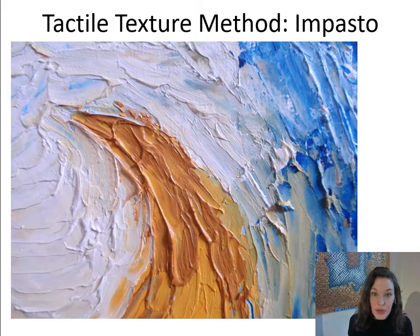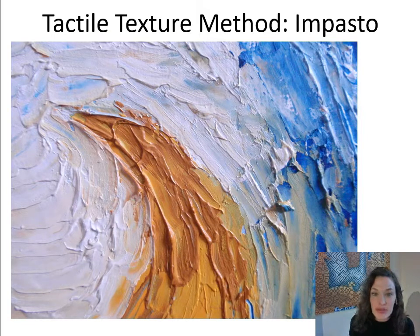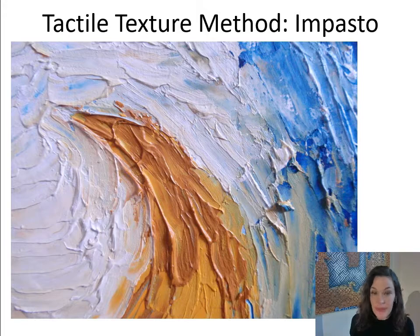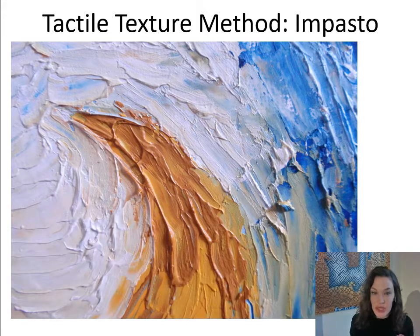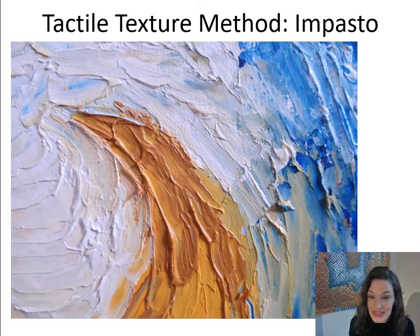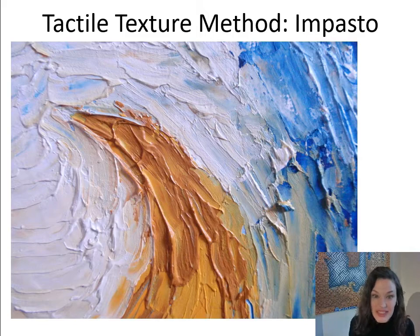One type of artwork that has tactile texture is impasto. This is a very close-up detail of a Van Gogh painting — he uses impasto painting. Impasto is an Italian word that means dough, referring to very thick, goopy paint that is not smoothly applied to the surface but rather has highlights and shadows that are real and cast onto the picture plane by its thickness.